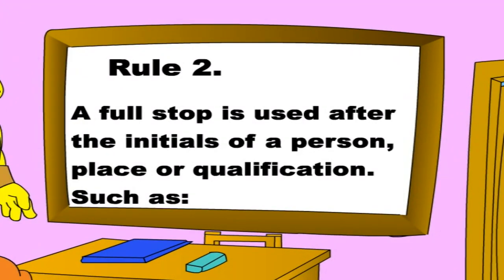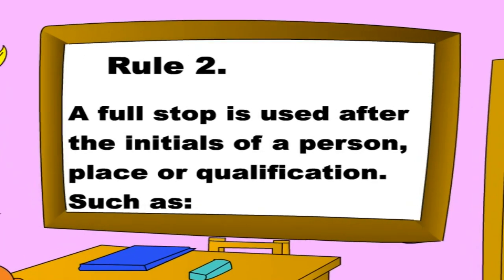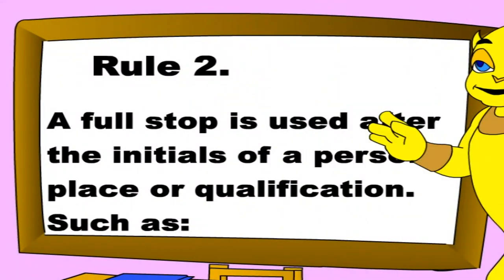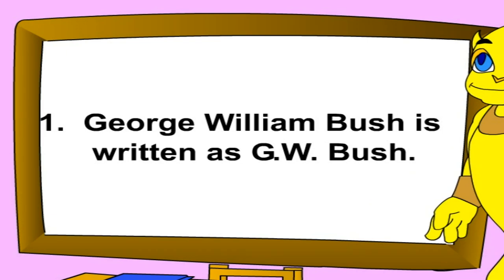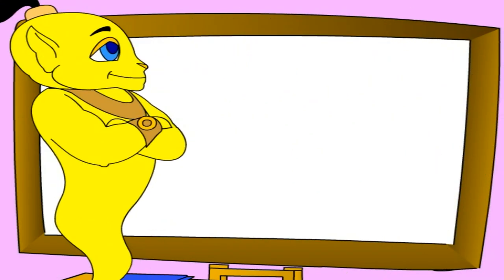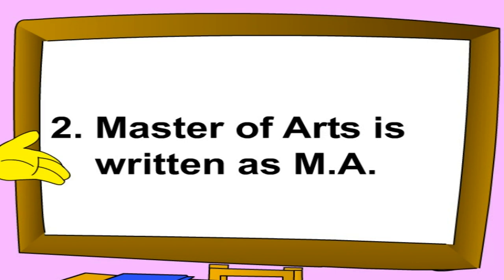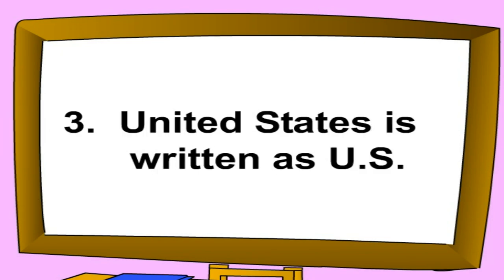Rule two: a full stop is used after the initials of a person, place, or qualification. For example: George William Bush is written as G.W. Bush. Master of Arts is written as M.A. United States is written as U.S.